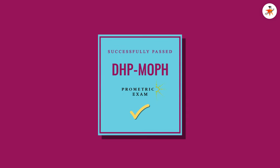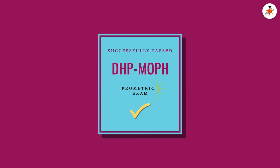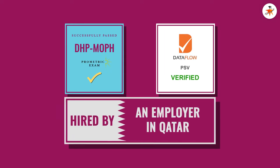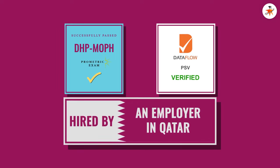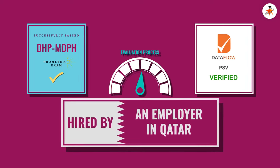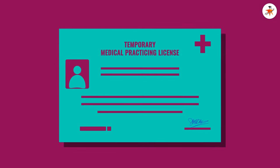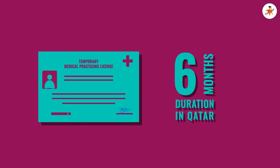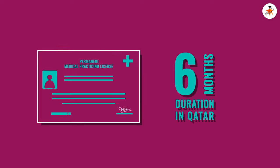Once you have successfully passed the DHP MOPH Prometric exam, have a positive Dataflow PSV report, and have been hired by an employer in Qatar, you can start the evaluation process to be issued a temporary practicing license of 6 months duration in Qatar before getting a permanent license. To start this evaluation process, once you fulfill the above requirements, simply visit the following website.